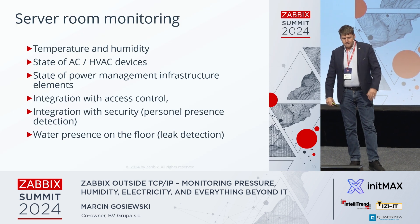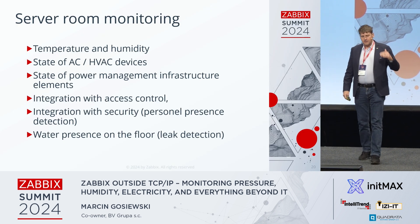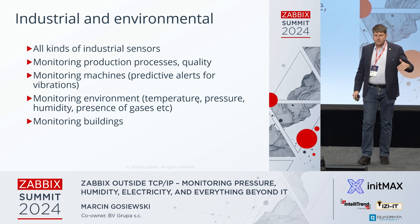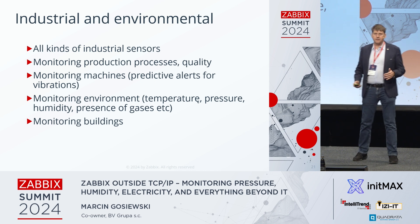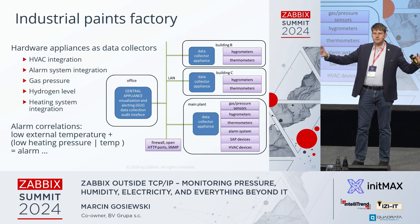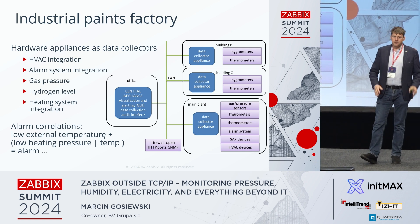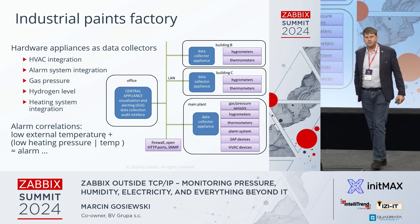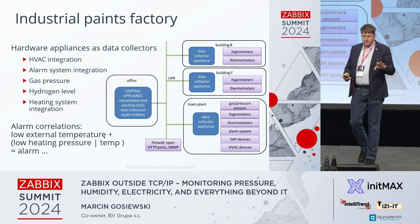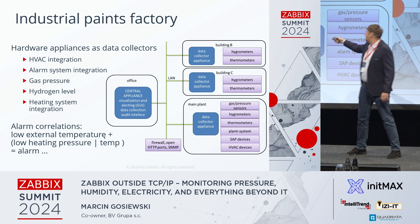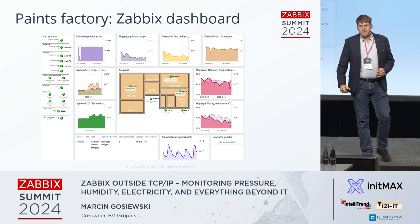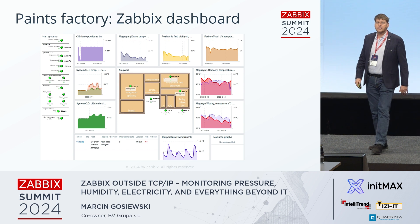Some usage scenarios. Server room monitoring — temperature, humidity, state of HVAC, all that. Industrial and environmental — all kinds of industrial sensors, monitoring machines, vibration, et cetera. Buildings. For instance, an industrial paint factory producing very fast paints used for packaging — something is packed within two to three seconds, very strict environmental rules. There are several data collectors in several buildings, a central appliance, and several types of sensors. There is a Zabbix dashboard showing the state of the whole system.